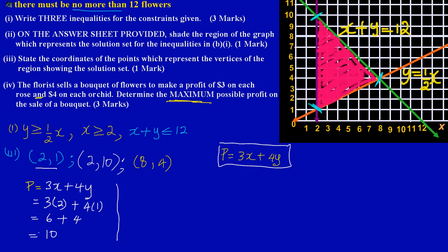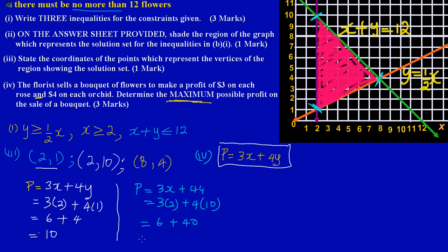Using the second coordinate (2, 10): P = 3(2) + 4(10) = 6 + 40 = 46. So the profit at the second vertex is forty-six dollars.